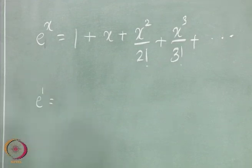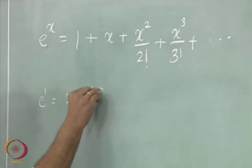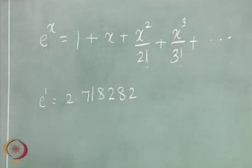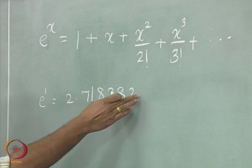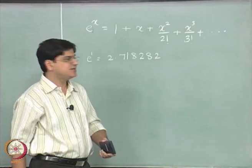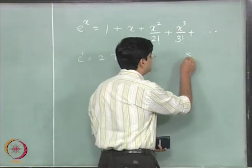E to the power 1 is 2.718282. We are stopping at essentially this particular point and what this signifies is the number of significant digits.